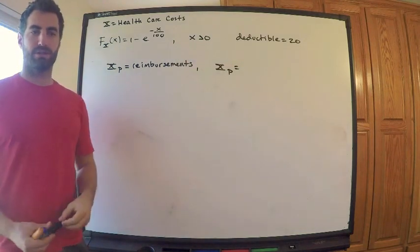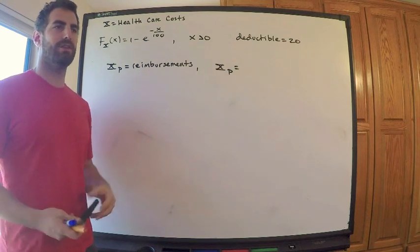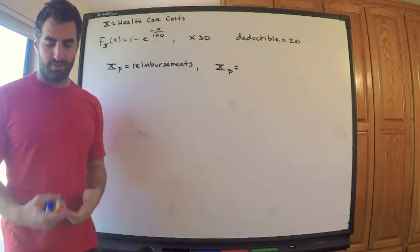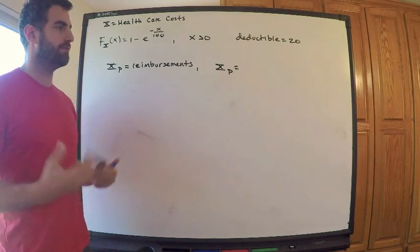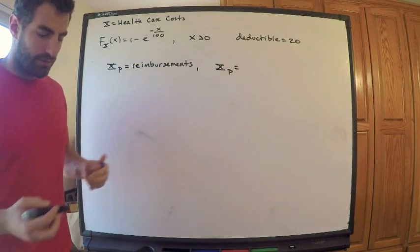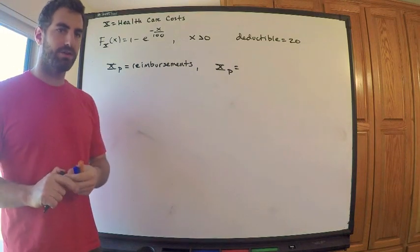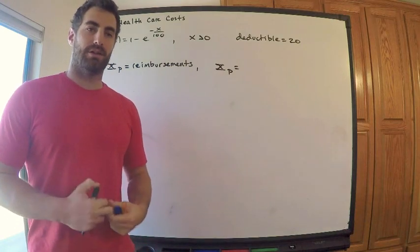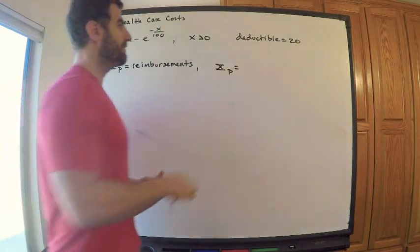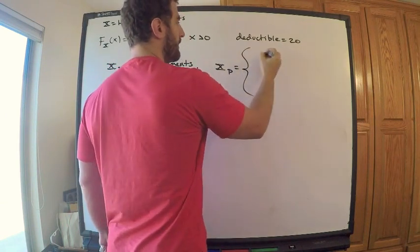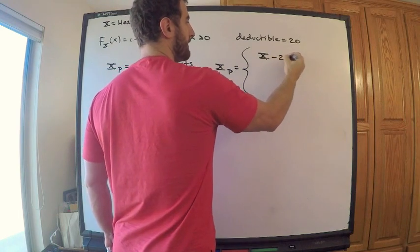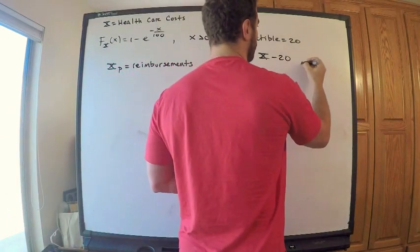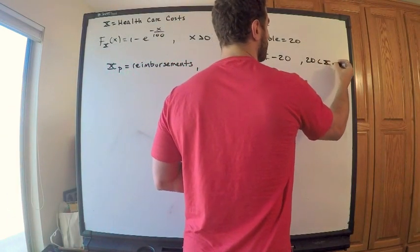They want to know something about the reimbursements — this is also called the insurance payment or insurance benefit. Different terminology is used but it all means the same thing. So this is the insurance payment, and this notation is always used for the reimbursement. The insurance reimburses the full amount of losses less the deductible — the typical situation — so we reimburse all losses minus the deductible, as long as losses are between 20 and 120.